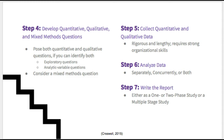Step 4 is to develop your research questions. Dependent upon your study, these questions may be formed before the study, but they may also be formed throughout. If you are able, you should pose both quantitative and qualitative questions. Quantitative questions specify the relationship among independent and dependent variables, while qualitative questions are open-ended and non-directional in nature and seek to describe the phenomenon. In mixed methods, it is common to find exploratory questions and analytic variable questions. Finally, consider a mixed method question — this type of question is to be answered by the mixed method research design being used. For example, in a convergent design, do the two databases converge and present consistent findings, or diverge and show contradictory findings? In an experimental design, how do the qualitative findings provide support and enhance understanding for the quantitative results?